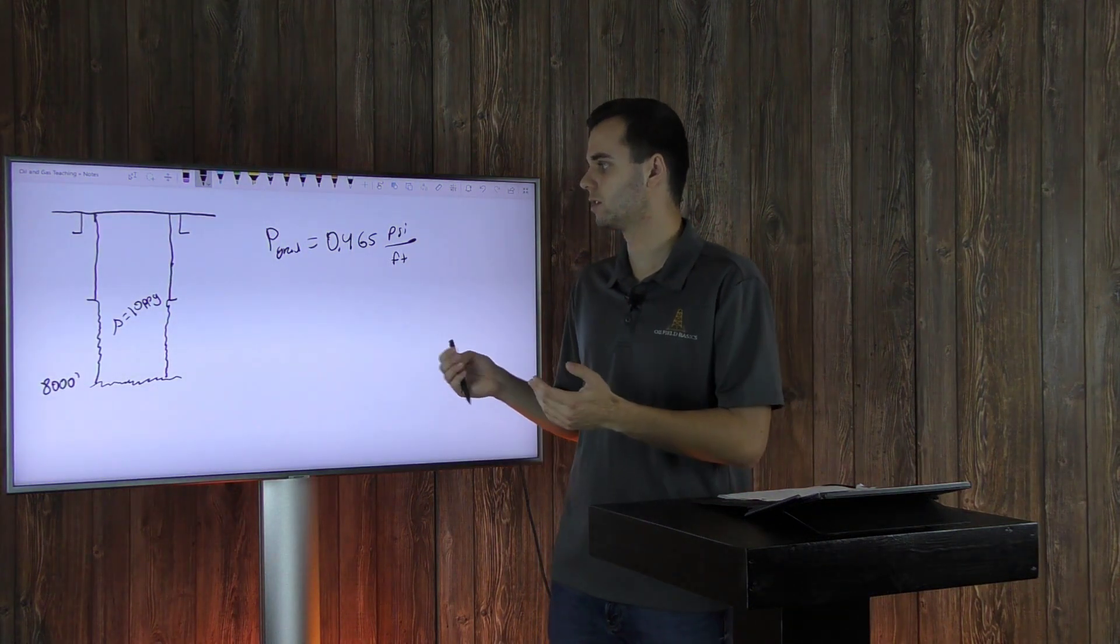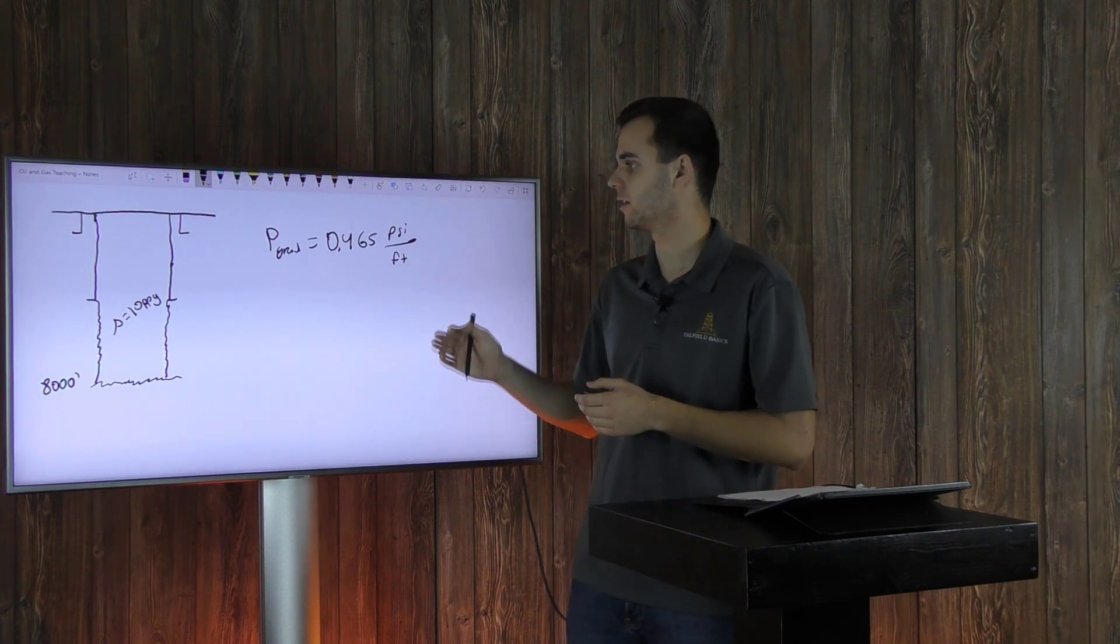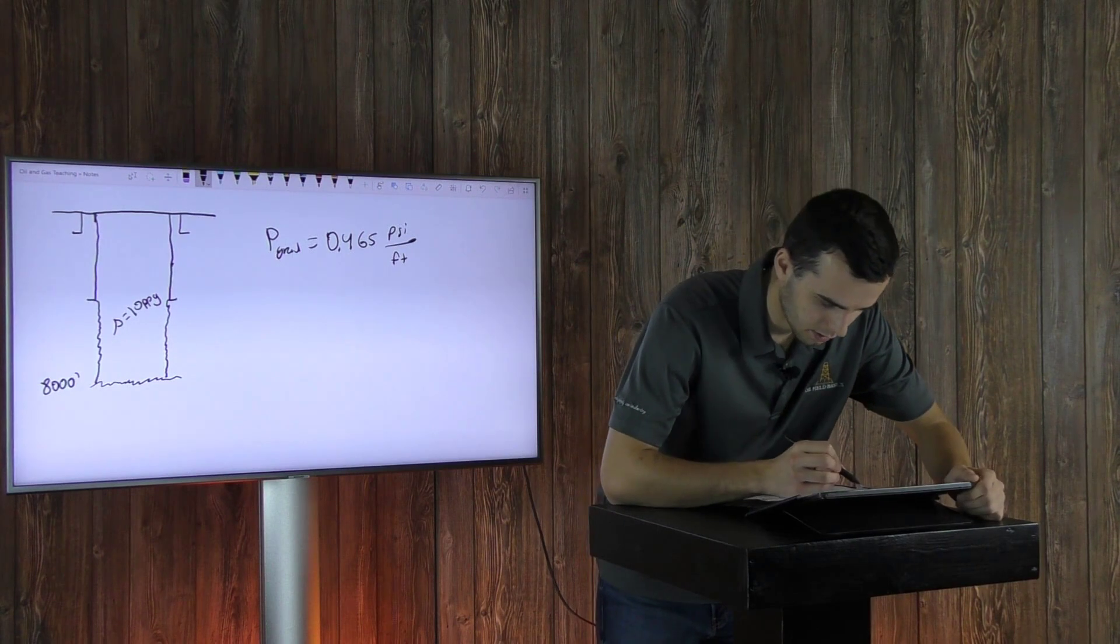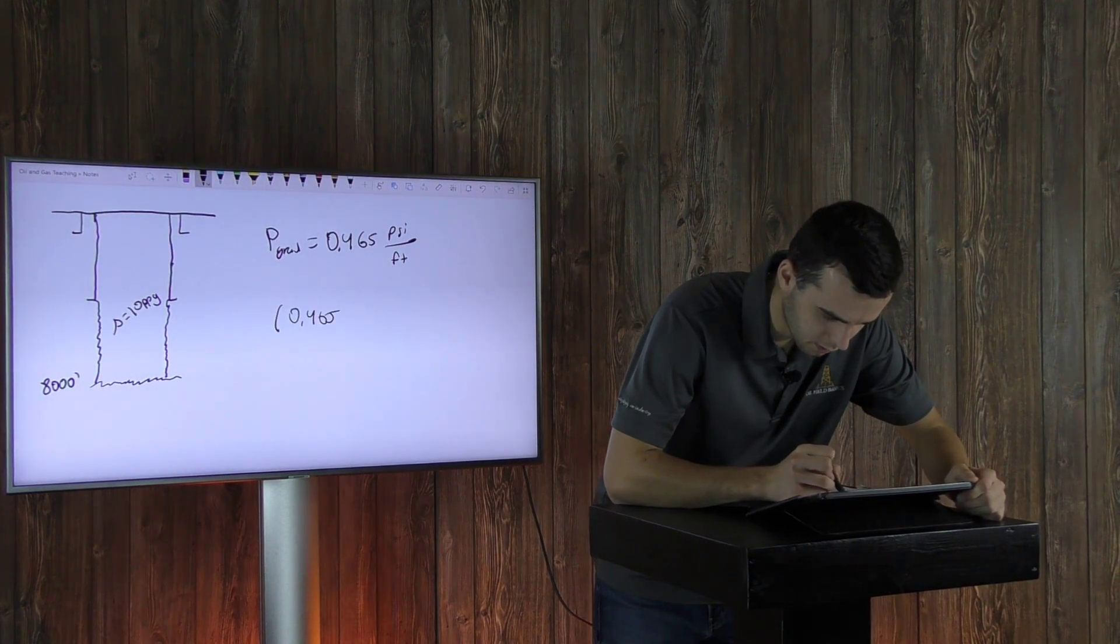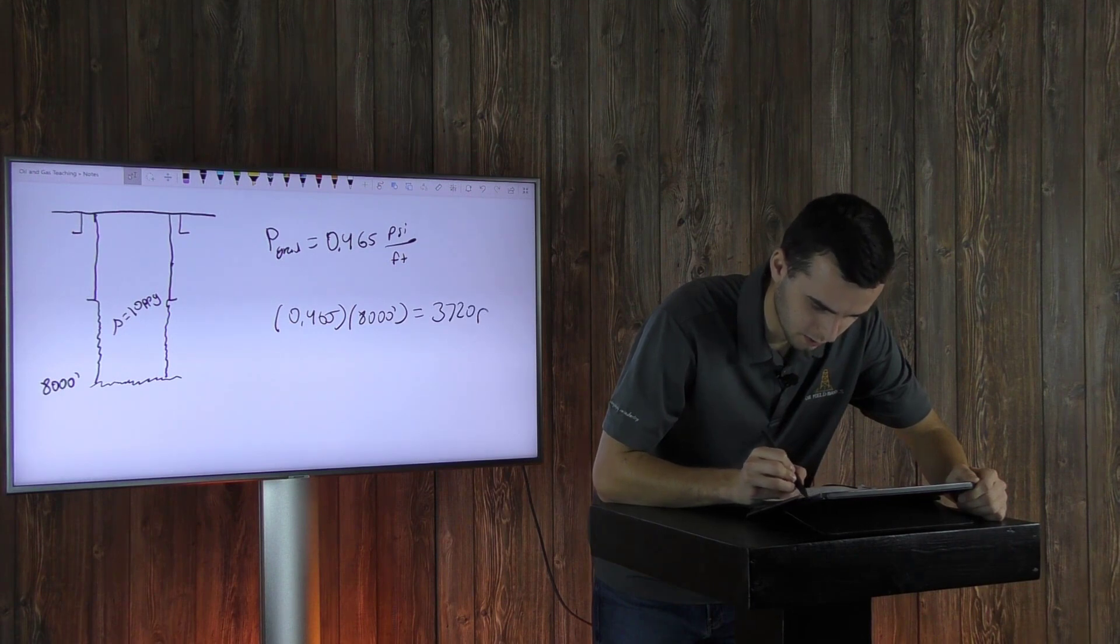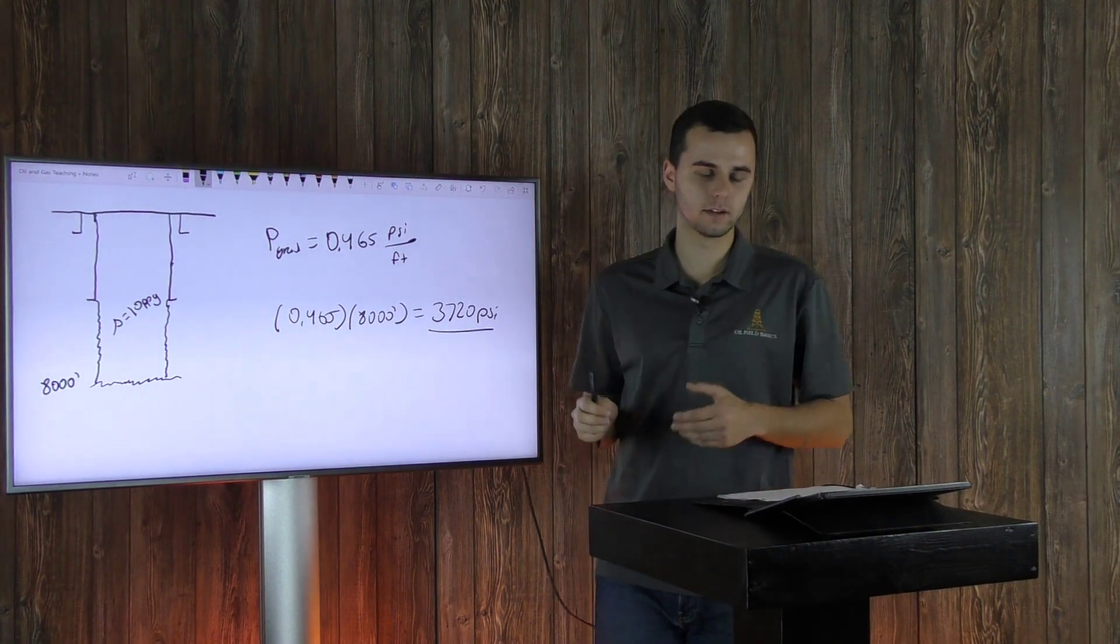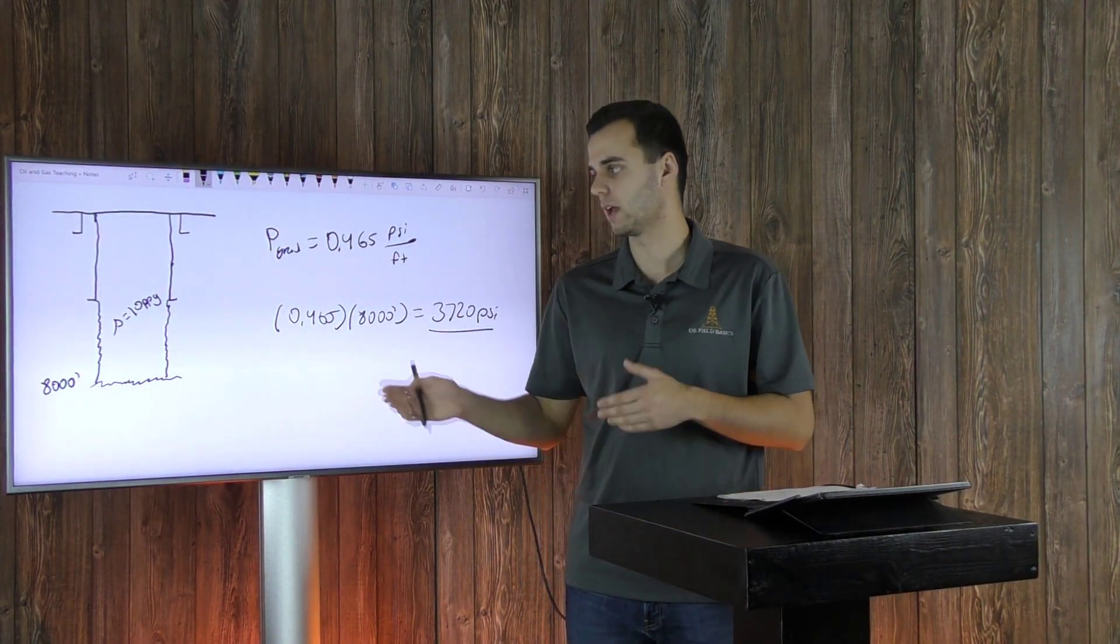And so in order to determine your psi, your pressure, you just multiply this value by 8,000. And so if you do that, you'll get 0.465 times 8,000 feet, which equals 3,720 psi. And so that is the pressure exerted by your formation at 8,000 feet.